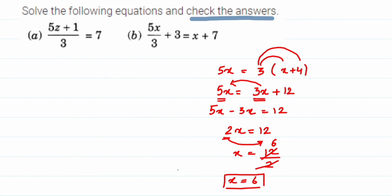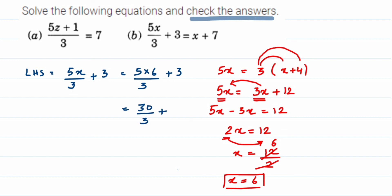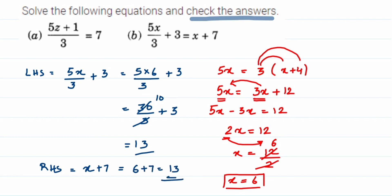To check, substitute x = 6 into the LHS, which is 5x/3 + 3. That gives 5 × 6 / 3 + 3 = 30/3 + 3. Cancel 30 and 3 to get 10, so 10 + 3 = 13. Now substituting into the RHS, which is x + 7: that gives 6 + 7 = 13. We get 13 on both sides.